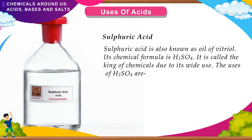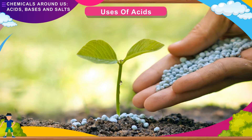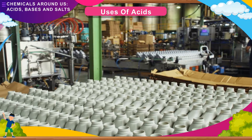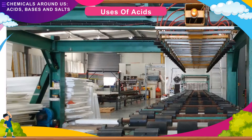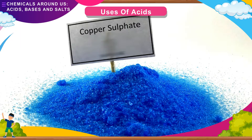Sulfuric acid (H₂SO₄), also known as oil of vitriol, is called the king of chemicals due to its wide use. Uses include: manufacture of fertilizers like superphosphate and ammonium sulfate, automobile lead-acid batteries, manufacturing artificial silk, plastics, paints, drugs, detergents, refining of petroleum, textile, paper and leather industries, as a dehydrating agent, and manufacturing chemicals like copper sulfate, Epsom salt, and many more.